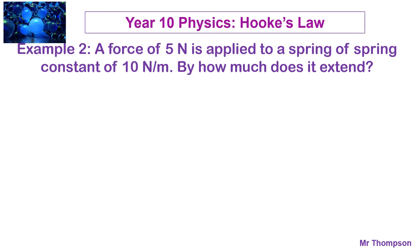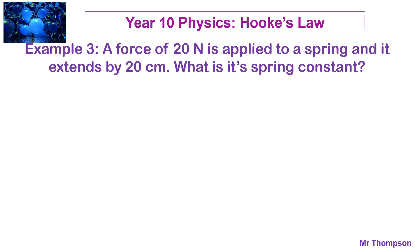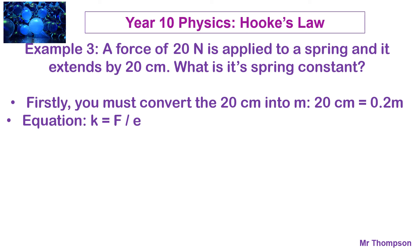Second example. If you have a force of 5 N, it's applied to a spring of constant 10 N per meter, how much will it extend? Rearranging the equation, extension F over K, 5 over 10, it would extend 0.5 meters. And example number three. Finally, if you have a force of 20 N, and it extends by 20 centimeters, what's the spring constant? A little bit tricky here. You must always convert the centimeters into meters. So, 20 centimeters is 0.2 meters. And then you can put it into the equation, and you get the spring constant of 100 N per meter.